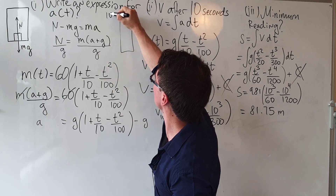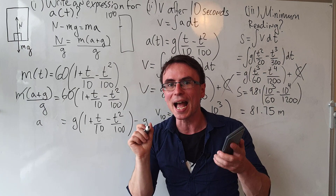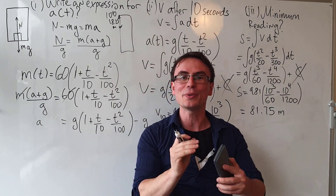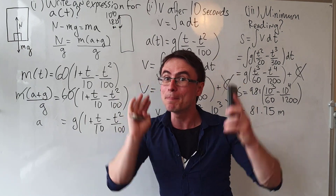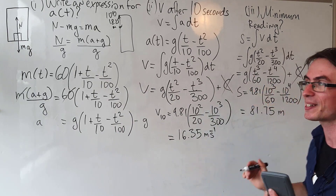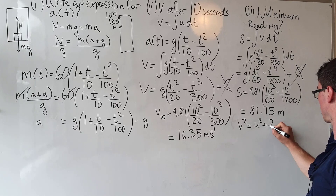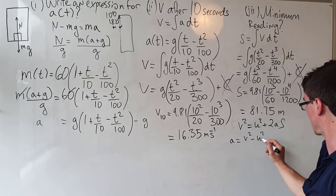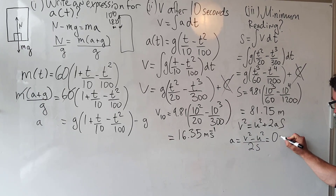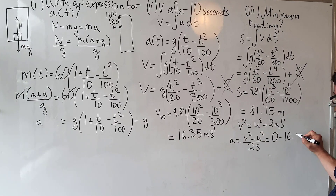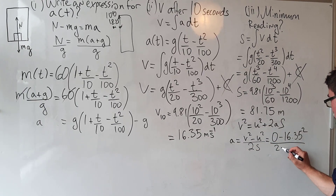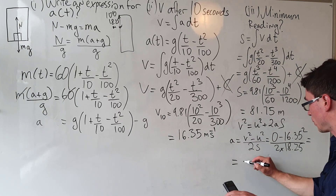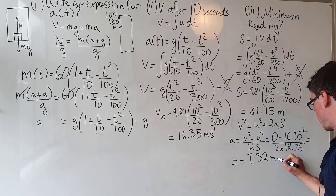Because the height of the building is 100 meters, the lift decelerates over the remaining 18.25 meters. For this portion we can use the SUVAT equations to find the minimum acceleration. Using v² = u² + 2as, the acceleration equals (v² − u²)/(2s). Final speed is zero, initial speed is 16.35 m/s, and distance is 18.25 m, giving an acceleration of −7.32 meters per second squared.